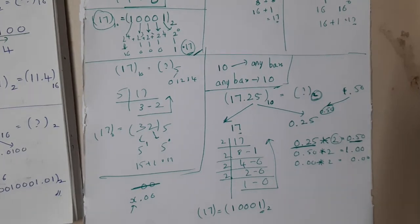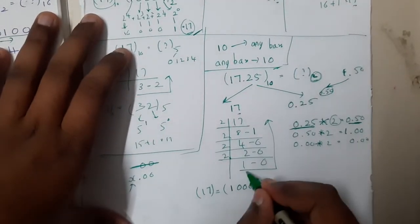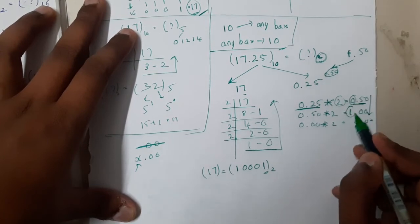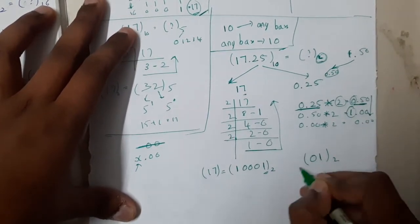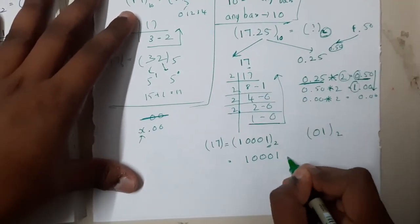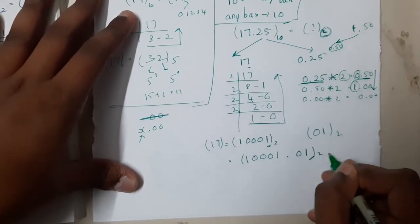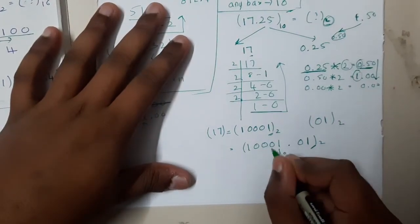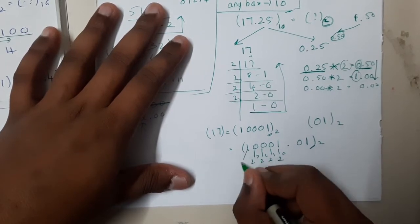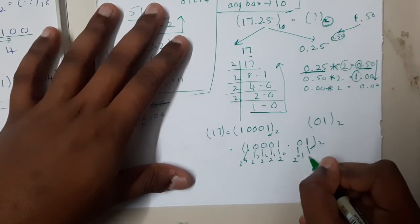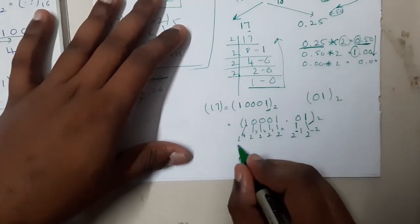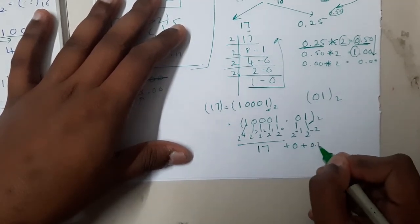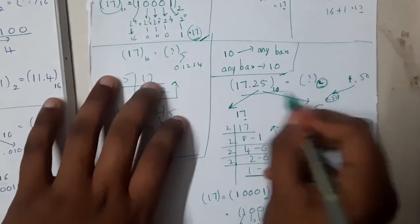Combining both parts: 17.25 base 10 = 10001.01 base 2. To verify: the integer part gives 17 as before, and the fractional bits use negative powers — 0×2⁻¹ + 1×2⁻² = 0 + 0.25 = 0.25. So we get 17.25 confirmed. You can apply this same method for any base.